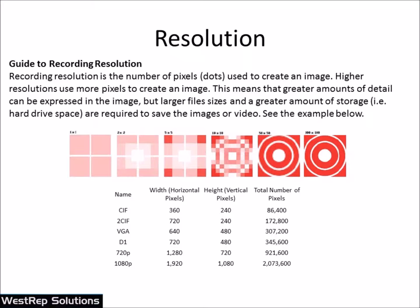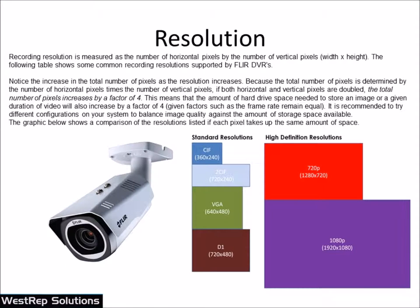Resolution. There are all different types of resolution that cameras can record in — more commonly today at the 1080p level or 720p level, and those refer to the pixel counts we're dealing with. A 1080p picture is 1920 by 1080 pixels, and 720p is 1280 by 720. The larger the picture and more pixels we have, the more we can do digital zoom after the fact and see more detail, especially from further away.